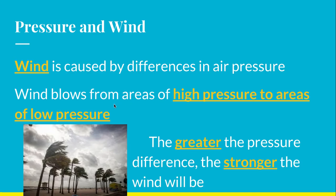So in a hurricane — remember, a hurricane is an area of low pressure. The stronger the hurricane is, that means it's very low pressure. Super low pressure is going to lead to very strong winds, and that makes for a strong hurricane.